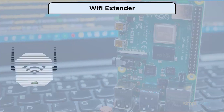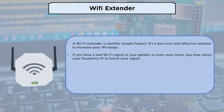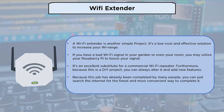Wi-Fi extender: a Wi-Fi extender is a low-cost and effective solution to increase Wi-Fi range. If you have a bad Wi-Fi signal in your garden or room, you can utilize your Raspberry Pi to boost your signal. It's an excellent substitute for a commercial Wi-Fi repeater. Because this is a DIY project, you can alter it and add new features.